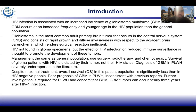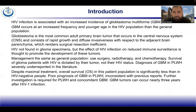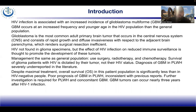Even with maximum treatment, the overall survival is significantly less than in HIV-negative people, representing a poor prognosis that has been inconsistent with previous reports. GBM tumors can occur nearly three years after HIV infection or sooner, and further investigation is required for people living with HIV.